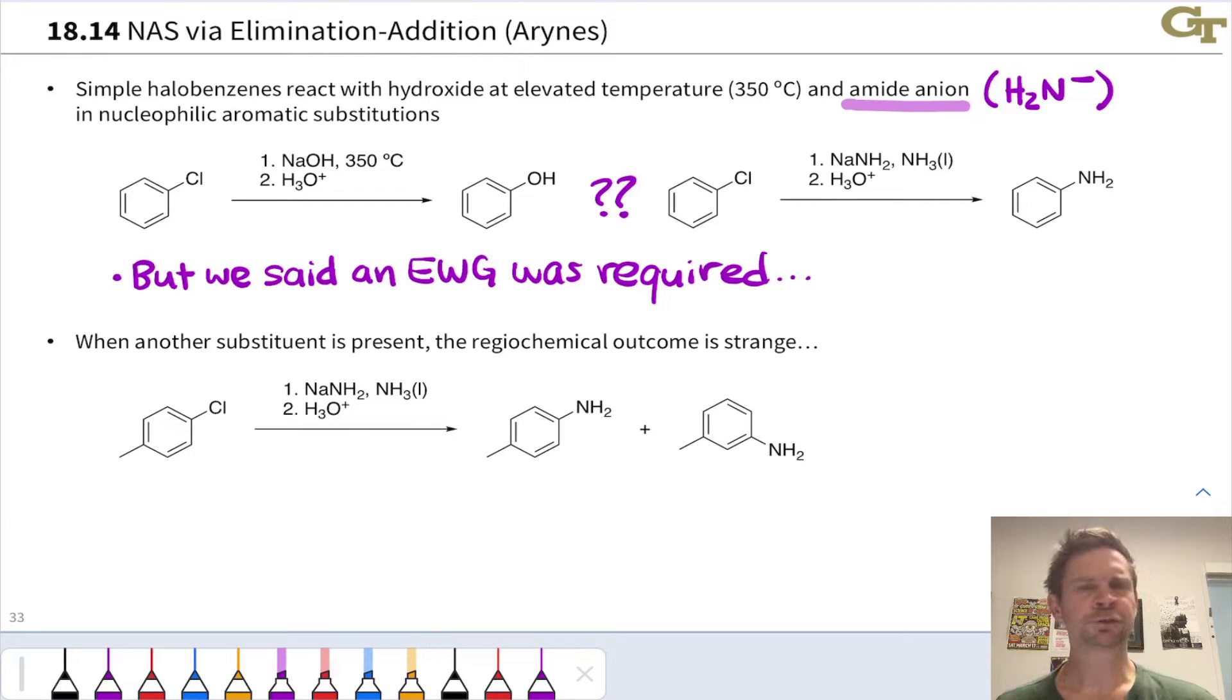We said earlier that an electron withdrawing group was required in the ortho or para position with respect to the leaving group to get this reaction to go. Where's the nitro group? Where is the severely electron deficient ring? These are halobenzenes, and when we talked about electrophilic aromatic substitution earlier, we noted that these are weakly deactivated toward EAS, so they're not that electron deficient. They don't seem to be electrophilic enough to engage with nucleophiles in nucleophilic aromatic substitution reactions. What in the world is going on?